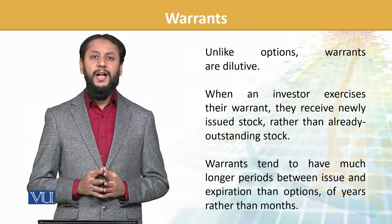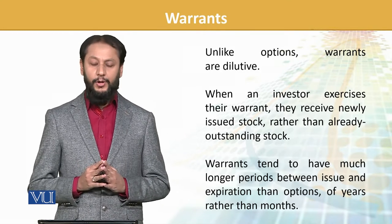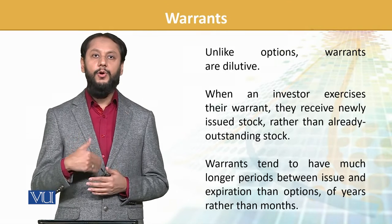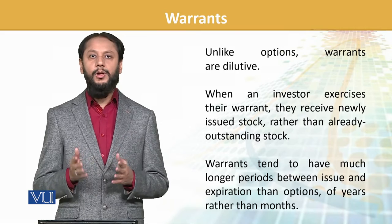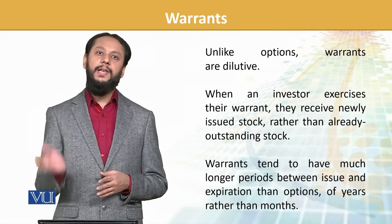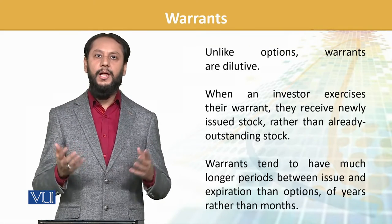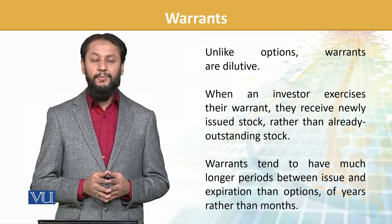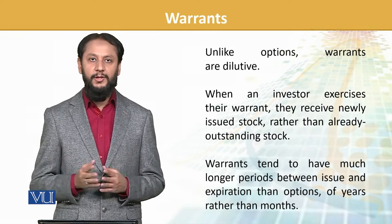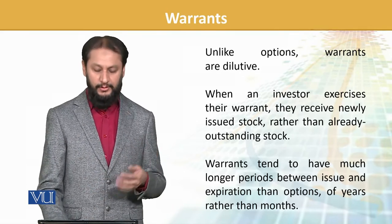Unlike options, warrants are dilutive — this is a very important point. When an investor exercises their warrants, they receive only newly issued shares. For example, if a company has issued 10 lakh shares and there is a warrant for 1 lakh shares, the company will issue 1 lakh new shares, taking total shares from 10 lakh to 11 lakh. This is why dilution occurs in earnings. Warrants also tend to have much longer periods between issue and expiration than options — it could be years.